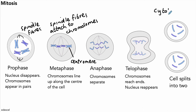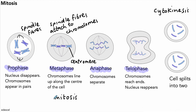The final stage is cytokinesis — this is where the cell splits into two. These are the stages you need to know and know the details of. This is mitosis, stage two of the cell cycle, and cytokinesis is the final stage of the cell cycle.